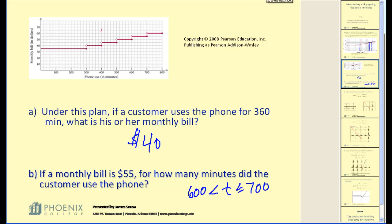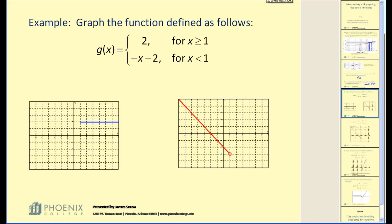Let's take a look at the graph of piecewise functions. For example, graph the function defined as follows: g of x equals 2 for x greater than or equal to 1, and g of x equals negative x minus 2 for x less than 1. There are two pieces to this function, so the end result may have two pieces. Here's how we want to interpret this.